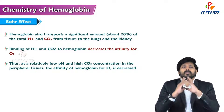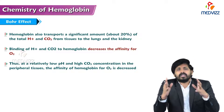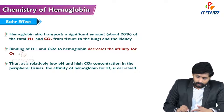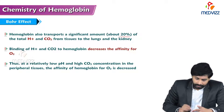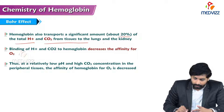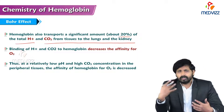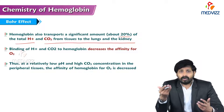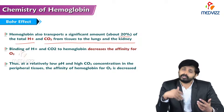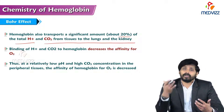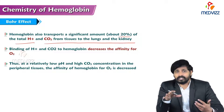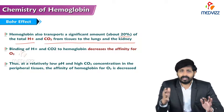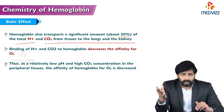Now coming to the Bohr effect — that means the effect of pH. Hemoglobin also transports a significant amount, about 20%, of total hydrogen ions and CO2 from tissues to the lungs and kidneys. CO2 is produced at the cellular level through cellular respiration — many chemical reactions inside cells produce CO2, which must be evacuated from inside to outside.